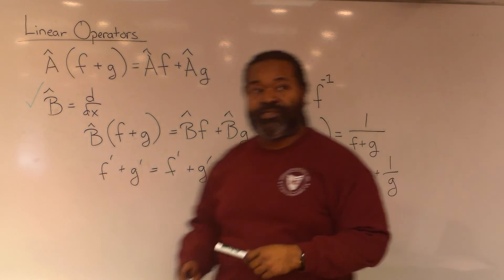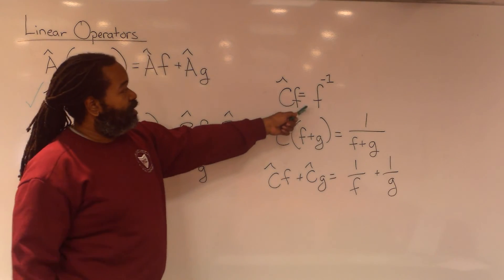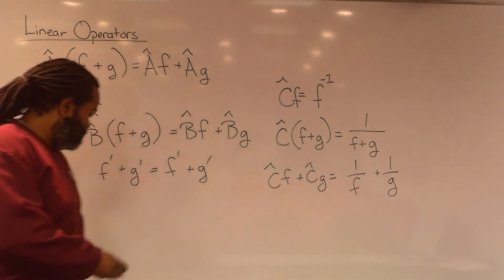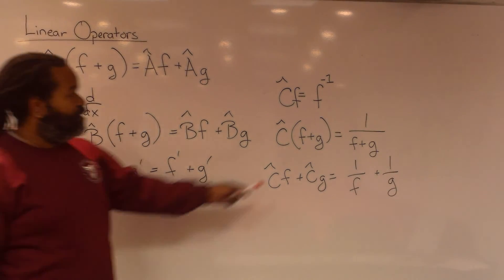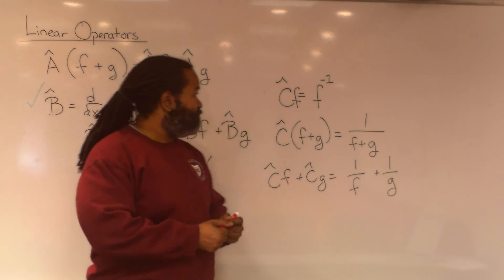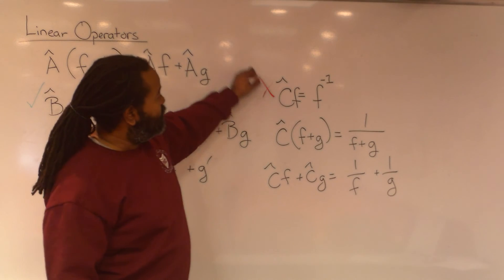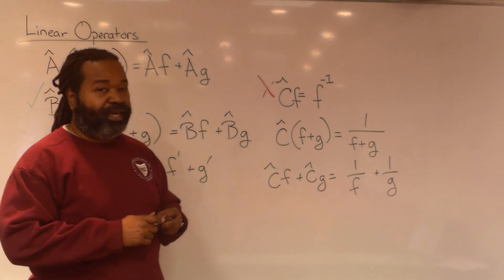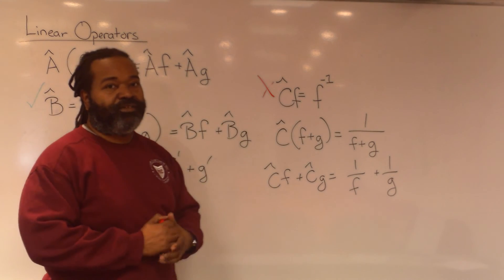In the case of operator C, where we are raising to the negative 1 power, this quantity is not equal to this quantity, so we'll do a red X, indicating that operator C is not a linear operator.